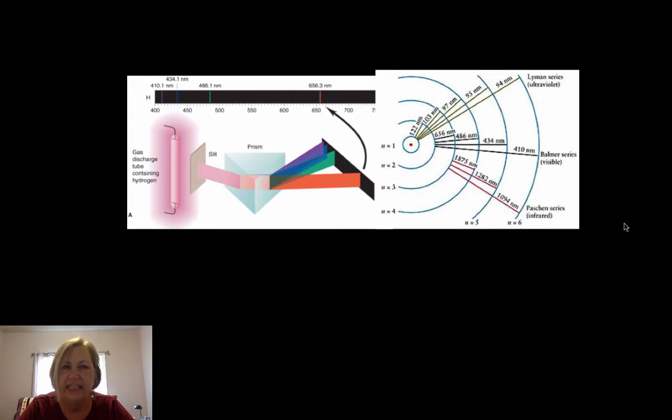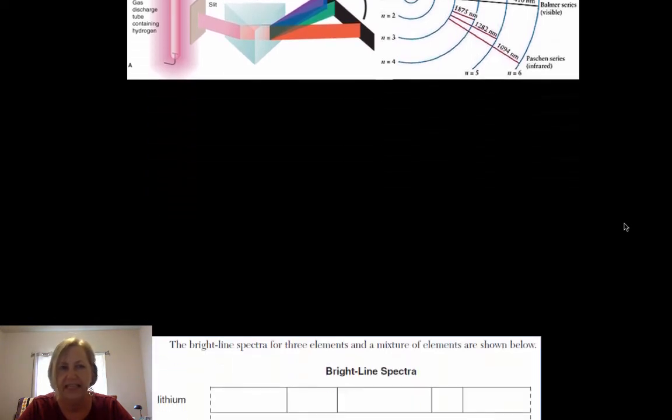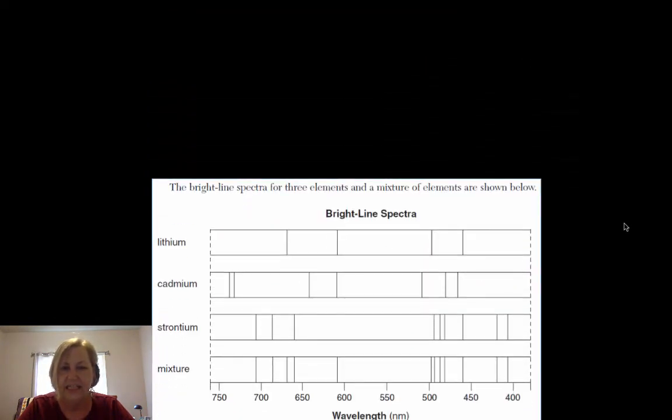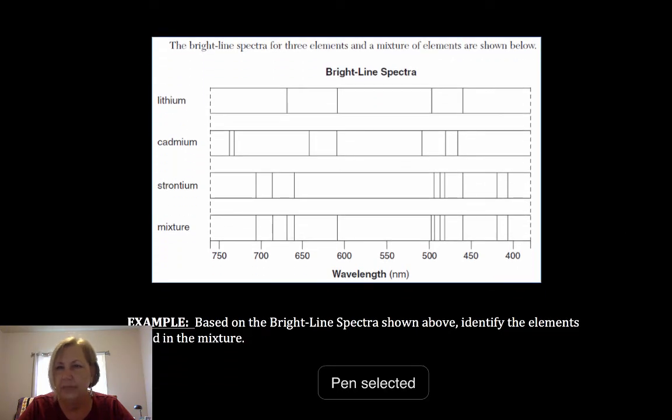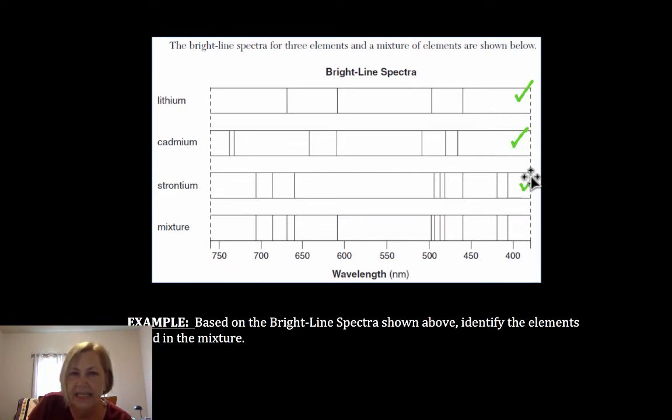And so each element, these wavelengths of light that you're seeing would be very different for each element. And let's take a look at this one. This shows just a simplistic view. You notice that lithium is very different than cadmium, is very different than strontium. And that's because their nuclear charges are different.